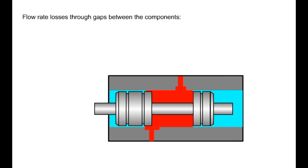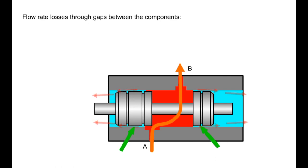Volumetric efficiency is based on loss of usable pressure fluid — meaning that part of the flow rate supplied by the hydraulic pump is lost. This happens everywhere where there are gaps between components through which pressure fluid can escape, for example between movable parts. In a directional control valve, a small portion of pressure fluid is pushed through the clearance gap required for the spool to move within the housing. Other flow rate losses occur at gaps allowing fluid to flow for lubrication or cooling purposes. The leakage pressure fluid is often fed back into the hydraulic circuit through a separate leakage line.